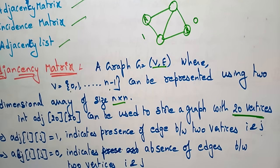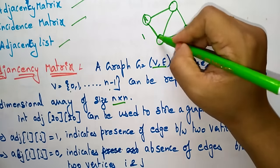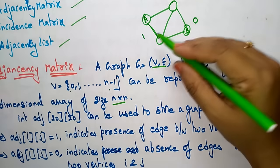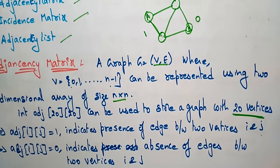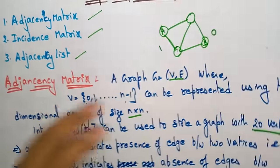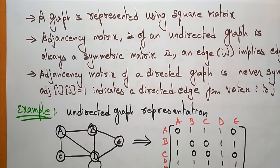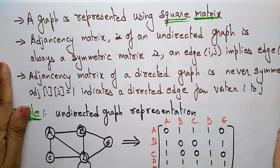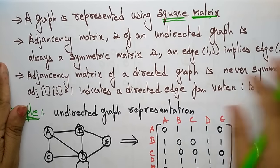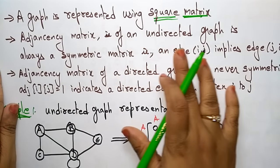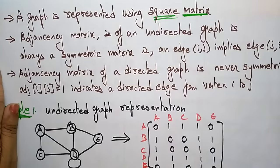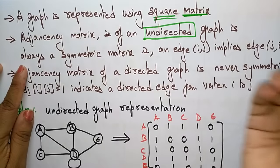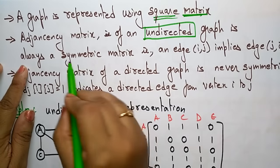Whenever adjacent[i][j] is equal to 1, it indicates the presence of an edge. If there is no edge between two vertices, then adjacent[i][j] is 0. The graph is represented using a square matrix. The adjacency matrix of an undirected graph is always symmetric. In an undirected graph there is no direction, so it is always a symmetric matrix.